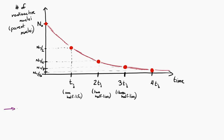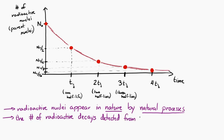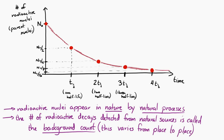Radioactive nuclei appear naturally — they're not just created by human activity. The number of radioactive particles detected without any unnatural or artificial source is called the background count. It varies from place to place: the background count deep underground might be different from what you'd measure on an airplane at 30,000 feet. But it's always there — there is always a natural background radiation, and we call this the background count.